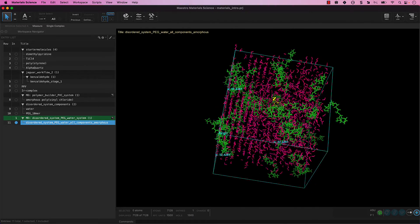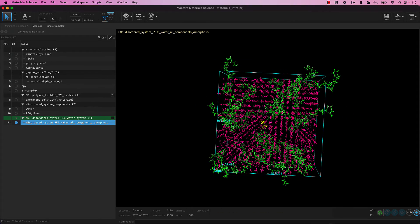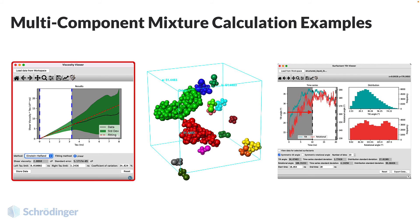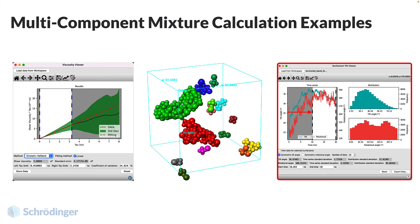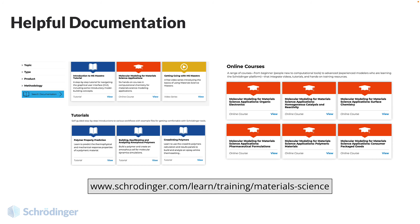The box is visible in the workspace. The water molecules and the PEG chains are represented by two different colors. Feel free to stylize the system however you prefer. Note that this system is just a starting model — it has not yet been equilibrated by molecular dynamics. Once a system is equilibrated using molecular dynamics simulations, many properties could then be calculated for the multi-component system. For example, you might calculate the viscosity, explore the cluster and analysis tools, or study surfactant tilt and rotation angles. Explore the detailed documentation at www.schrodinger.com/learn/training/materials-science where you can access help pages, many tutorials, and information on online course offerings.